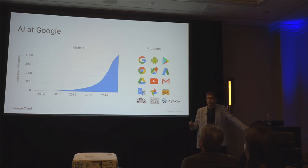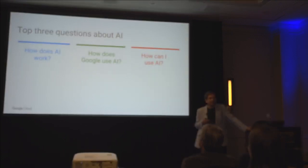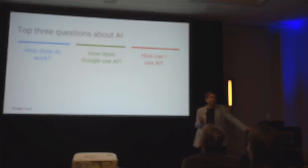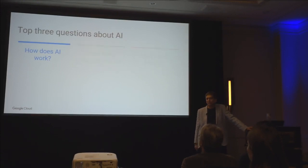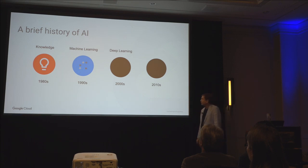What I'll do today is go through the three questions I get the most about AI: how does all this AI work, how does Google use AI, and then how can you do the same thing and use the same kinds of AI in your work? I'll do a very quick intro because I think folks here know AI and machine learning pretty well.